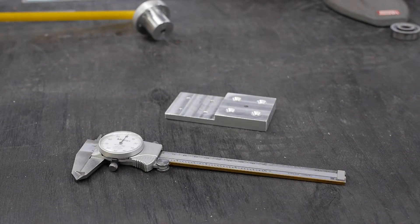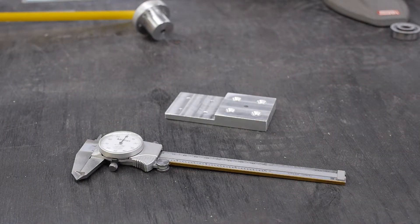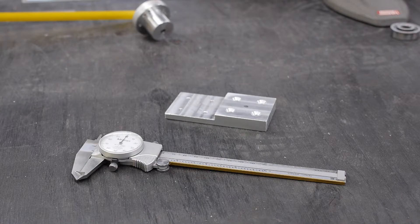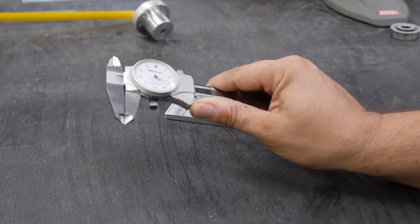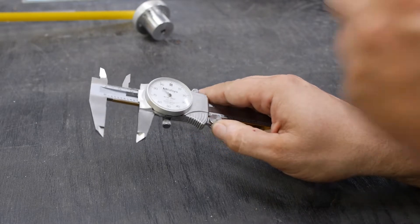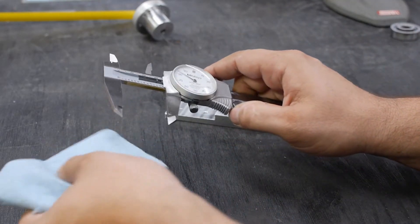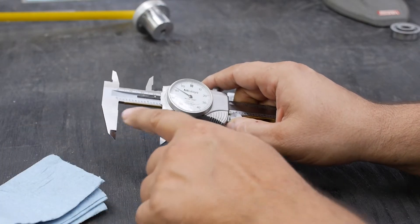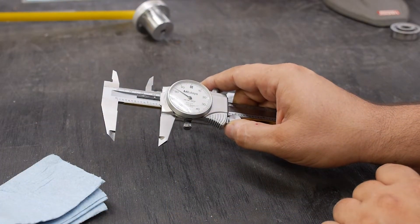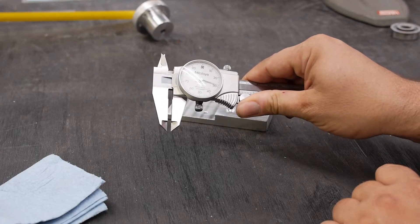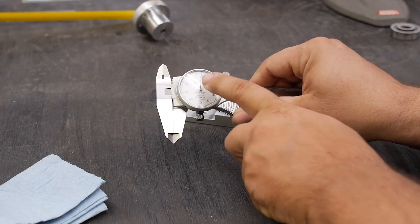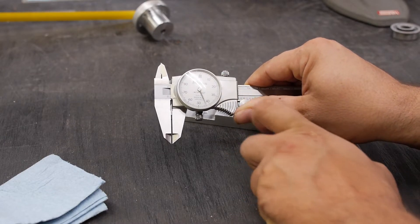Properly using calipers requires a little discipline because there are a few things you need to check each and every time. First, when you pick up the calipers, you want to open them and wipe off the jaws that you are using with a clean rag to make sure there are no chips or oil or debris on them.